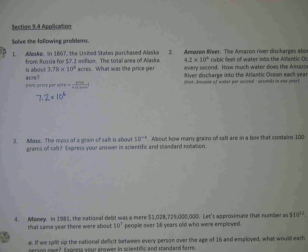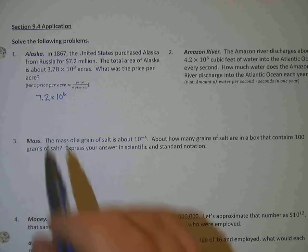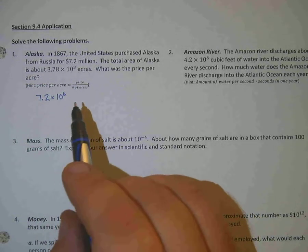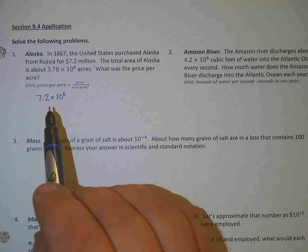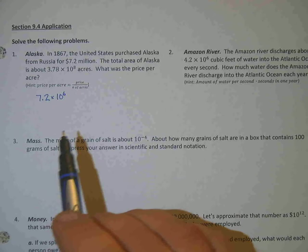And it says that the total area of Alaska is about 3.78 times 10 to the 8th acres. The question on this asks, what was the price per acre? So my hint here, it's kind of small, but you can read it. It says that the price per acre equals the price divided by the number of acres.